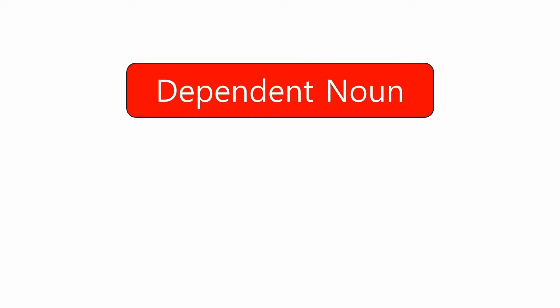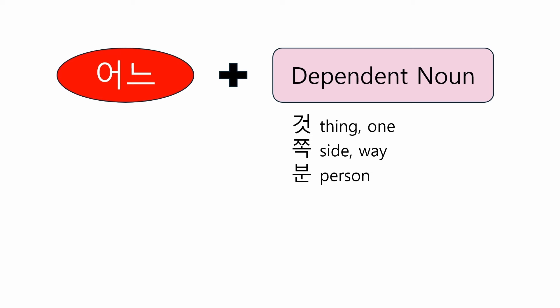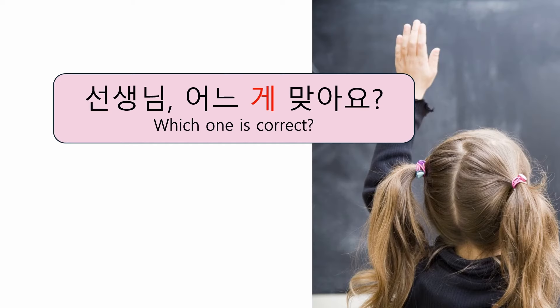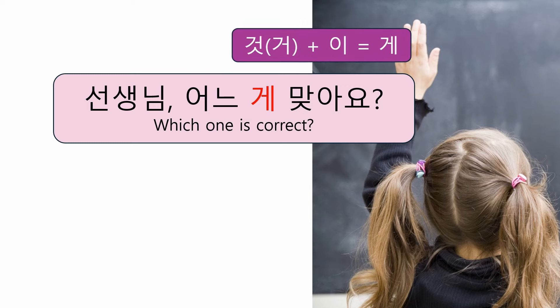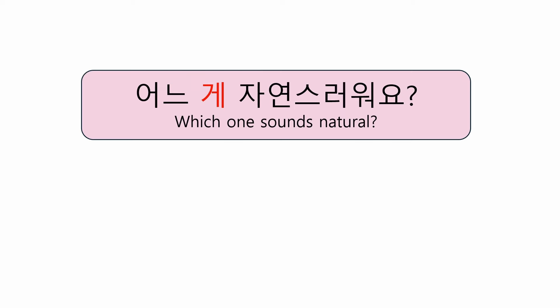Dependent noun: 어느 also comes with dependent nouns such as 거, 쪽, 분, and so on. First, 거 corresponds to 'thing' or 'one' in English. If you are getting different answers each time you solve a math problem, you can ask your teacher: 선생님 어느 게 맞아요? — Which one is correct? Note: 게 is the form when the subject particle 이 is added to 거, which is an informal form of 것. You could also ask: 어느 게 자연스러워요? — Which one sounds natural?